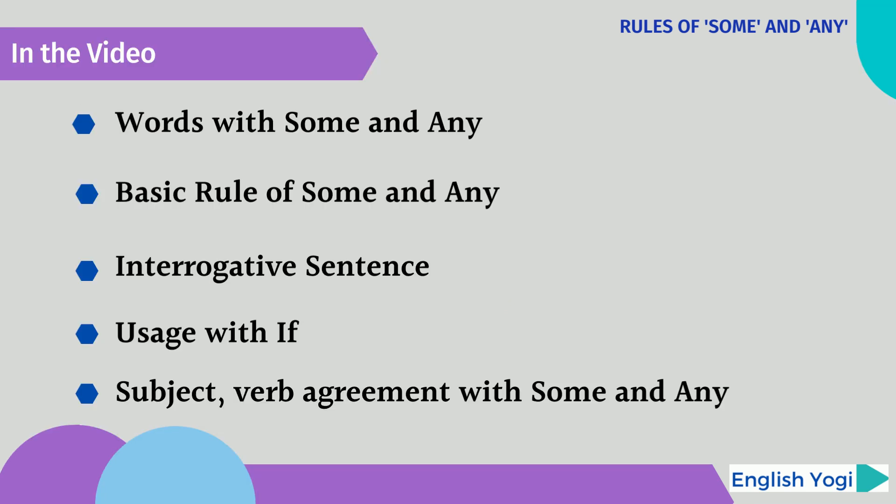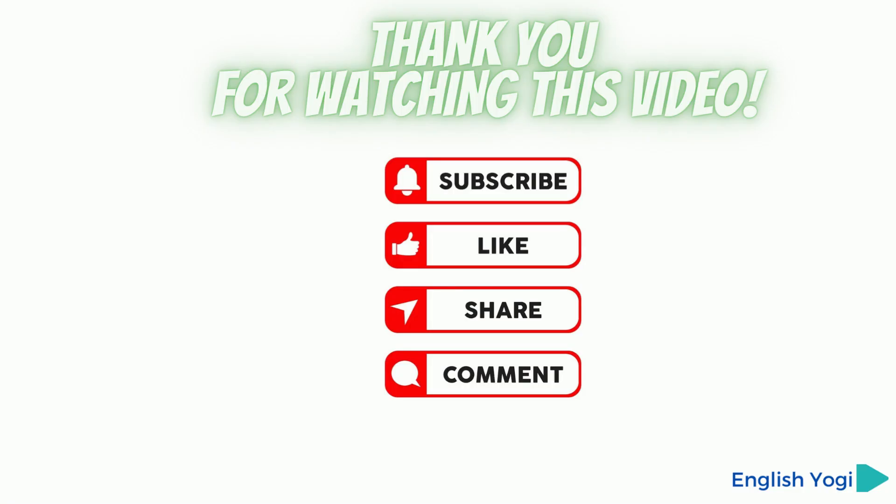So these are the basic rules about 'some' and 'any'. We discussed certain words with 'some' and 'any', the basic rules for positive and negative sentences, interrogative sentences, the use of 'any', 'anybody', 'anything' with 'if', and subject-verb agreement with 'some' and 'any'. If you like the video, please like, subscribe, and share.